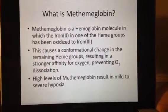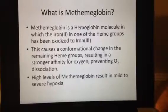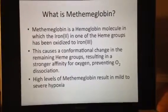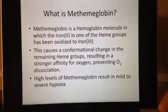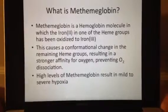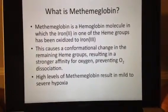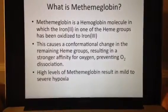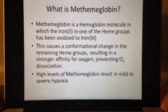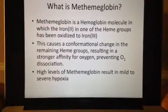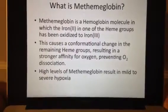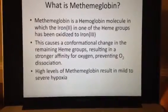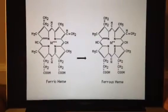Methemoglobin is a hemoglobin molecule in which the iron 2+ heme group has been oxidized to iron 3+. This causes a conformational change in the remaining heme groups, resulting in a stronger affinity for oxygen, preventing O2 dissociation. Typically in healthy adults, less than 1% of hemoglobin exists as methemoglobin, so it is not really an issue. But certain congenital defects or drugs such as nitroglycerin or local anesthetics can increase the amount of methemoglobin in your system to a dangerous level, which results in mild to severe hypoxia.